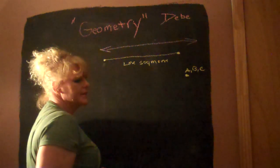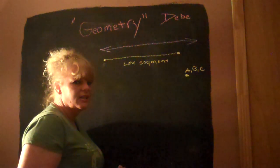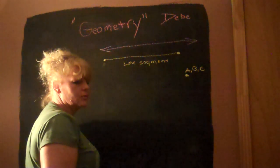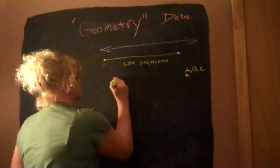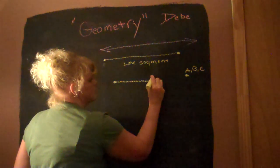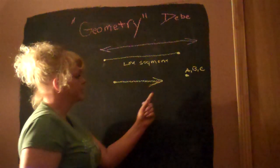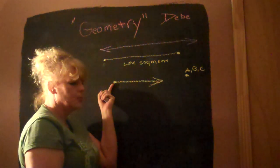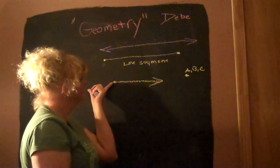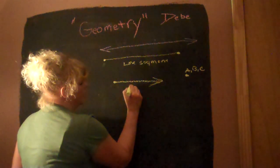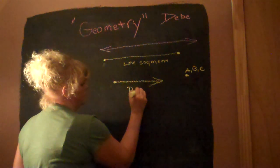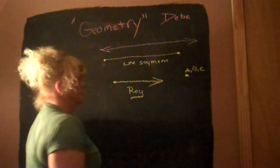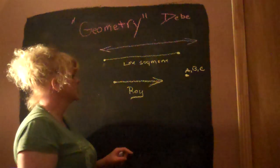Now, what is a line that has a point, but goes on forever in another direction? It looks like this. This arrow represents that the line is going to keep going in that direction. This point shows that it's going to stop. Now, we call this a ray. Okay? It's really simple.